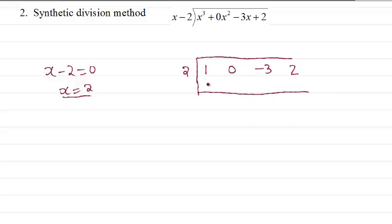First, 1 plus nothing is 1. Now we do 2 times 1, we write it there. So 0 plus 2 is 2. 2 times 2 is 4. So minus 3 plus 4 is 1. 1 times 2 is 2. Then 2 plus 2 is 4. So this is our x squared term, x, constant, and the remainder.